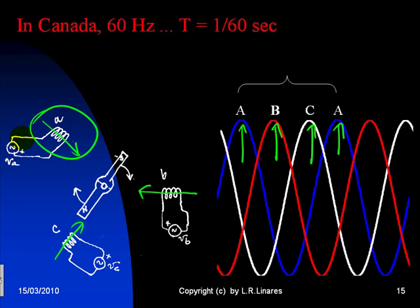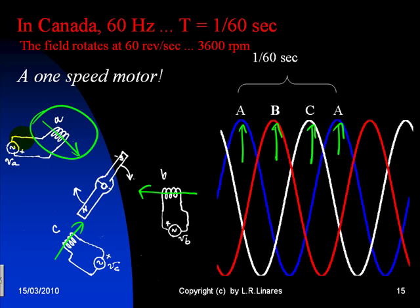In Canada, that is 1/60th of a second. So, the rotating machine is turning at a velocity of 60 revolutions per second, or what is the same, 3600 RPM, 3600 revolutions per minute. This is a motor that has only one speed, to be sure.